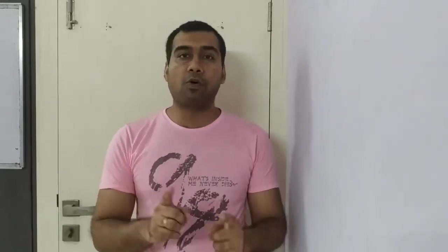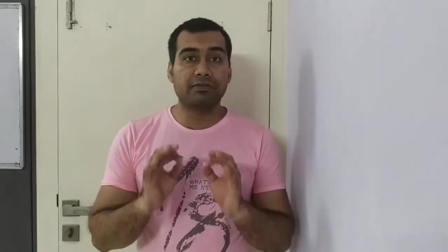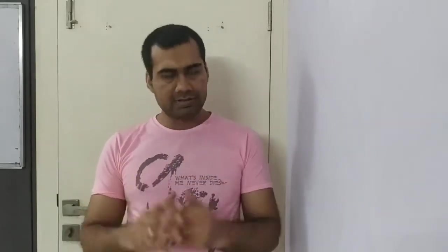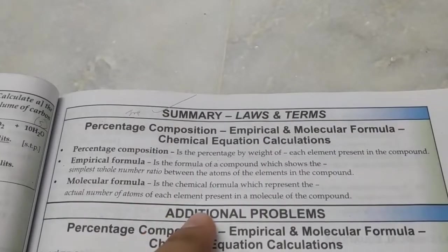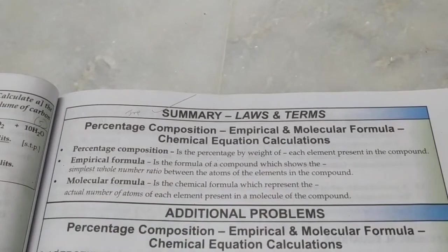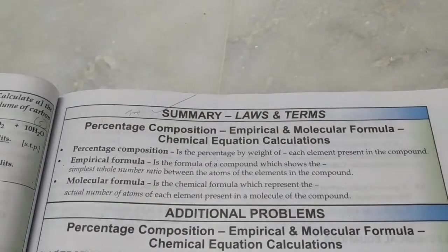Let's study 10th standard ICSE chemistry chapter 4b — empirical formulae and how to calculate them. We'll be doing some numericals. Empirical formula is a formula of a compound which shows the simplest whole number ratio between the atoms of the elements in the compound. Molecular formula is the chemical formula which represents the actual number of atoms of each element present in a molecule of the compound.